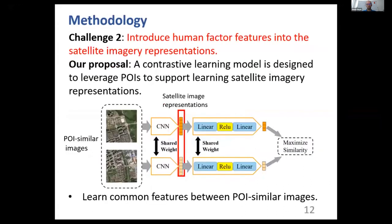The second challenge is to introduce human factor features into the satellite imagery representation learning process. We propose to design a contrastive learning model to take advantage of POI data that supports learning representations of unlabeled satellite images. We first measure the similarity across all satellite images in the POI domain and learn common features between the POI-similar images.